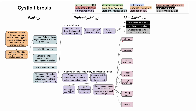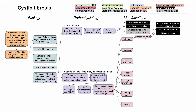Now let's get to the manifestations. We have the GI tract, the pancreas, the liver tracts, the bile ducts, the nasal sinuses, the lungs, and the urogenital tract. First in the GI tract, you can have a meconium ileus. Baby's first stool is called meconium, and when it's not able to pass through the GI tract because of such thick secretions, it's called a meconium ileus. It presents as no meconium or stool for the first one or two days of life, and the baby might have abdominal distension and bilious vomiting.